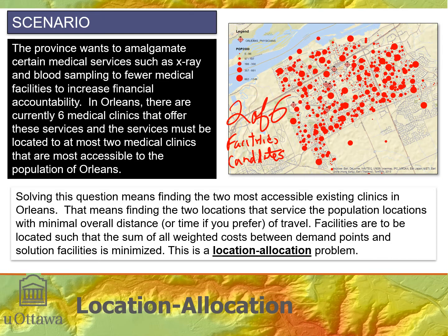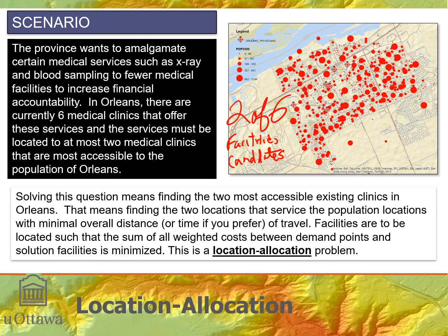So we have two out of six facilities that are candidates to be chosen among. We don't know which two of the six would best service the population. The demand for those services is represented by proportional red circles, where each circle's size is proportional to the population for that block within Orleans. These are block-level population data, the same population data previously used in examples, shown here for Orleans only to better visualize things.